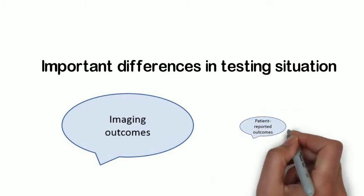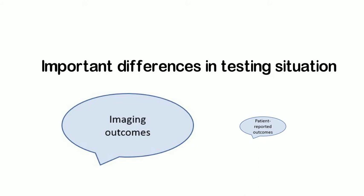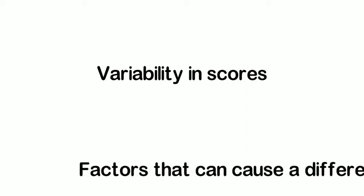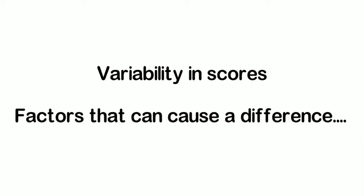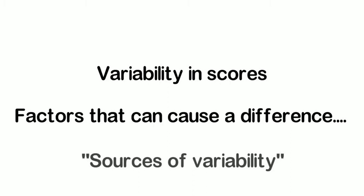When situations cause the scores—score here is shorthand for a result from imaging tests—that should have had the same score to be different, this is called variability in scores. The imaging group said that all these factors that can cause a difference in a score should be labeled sources of variability in a scoring instrument.